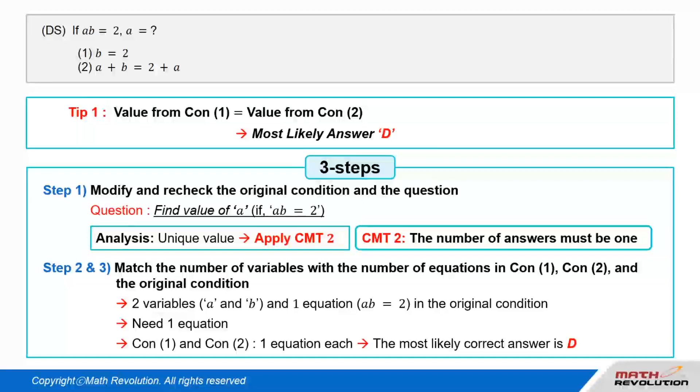Follow the second and the third steps. From the original condition, we have two variables, A and B, and one equation: A times B equals 2. To match the number of variables with the number of equations, we need one equation. Since conditions 1 and 2 will provide one equation each, D would most likely be the answer.